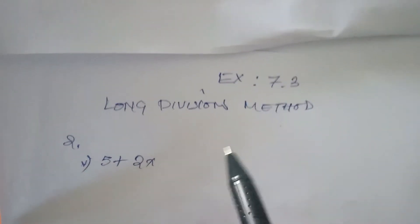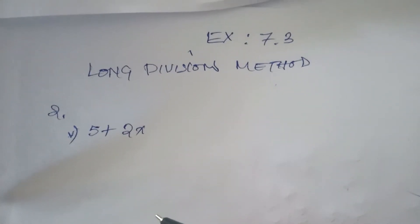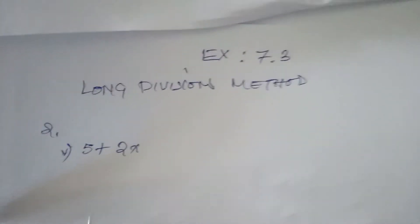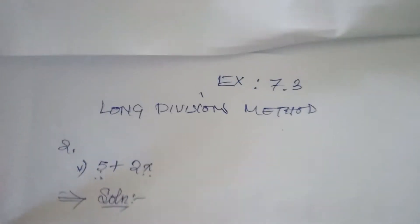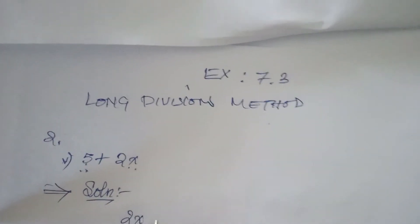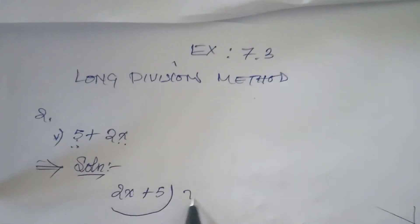We have 2x plus 5 dividing x cubed plus 3x squared plus 3x plus 1. If anything is wrong I will update you. We divide x cubed plus 3x squared plus 3x plus 1.